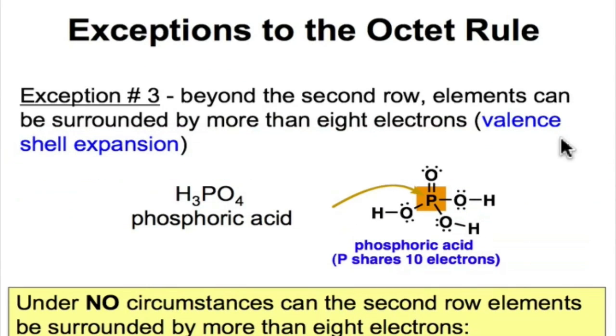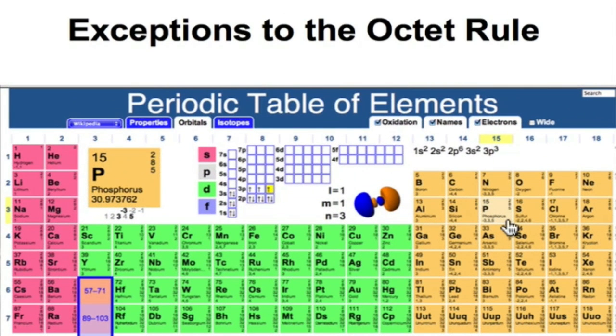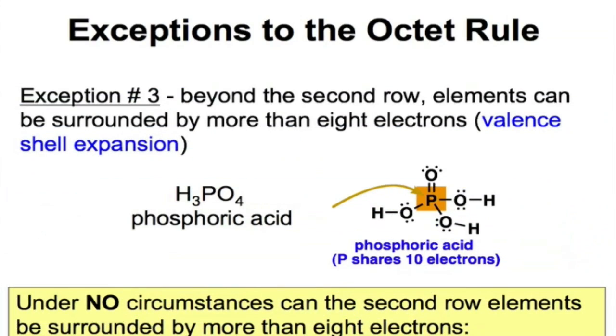The last exception to the octet rule deals with elements in the third row of the periodic table and beyond, like phosphorus, for example, phosphorus in phosphoric acid, shares a total of ten electrons. You can see that there are four electrons involved in this double bond domain, and then two electrons each in three single bond domains to make a total of ten electrons being shared.